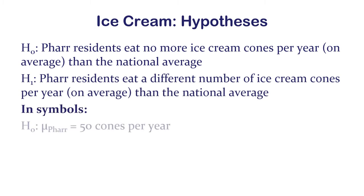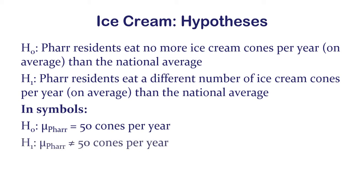In symbols: the null hypothesis says the true far mean is 50, just like the state average. The alternative says the true far mean is not 50 — either greater or less. That's how we set up these hypotheses.